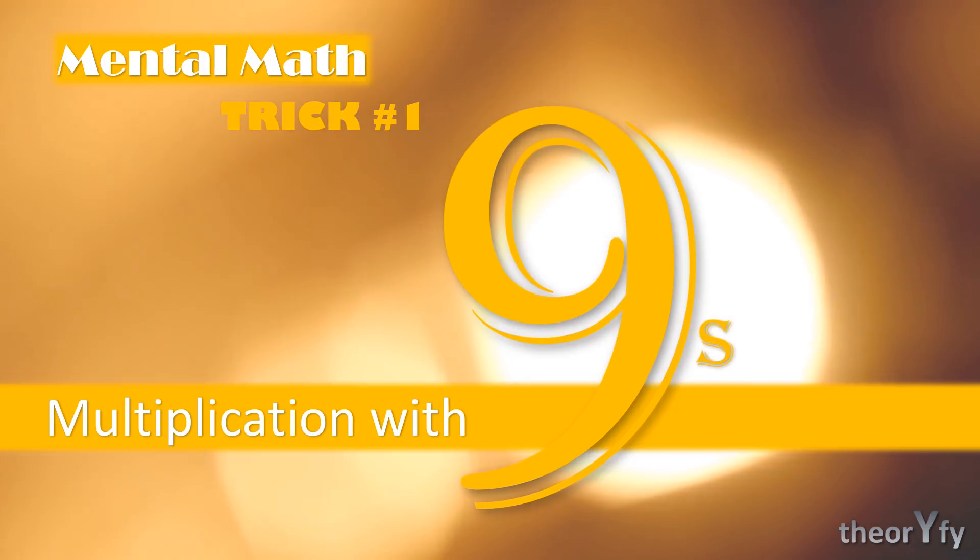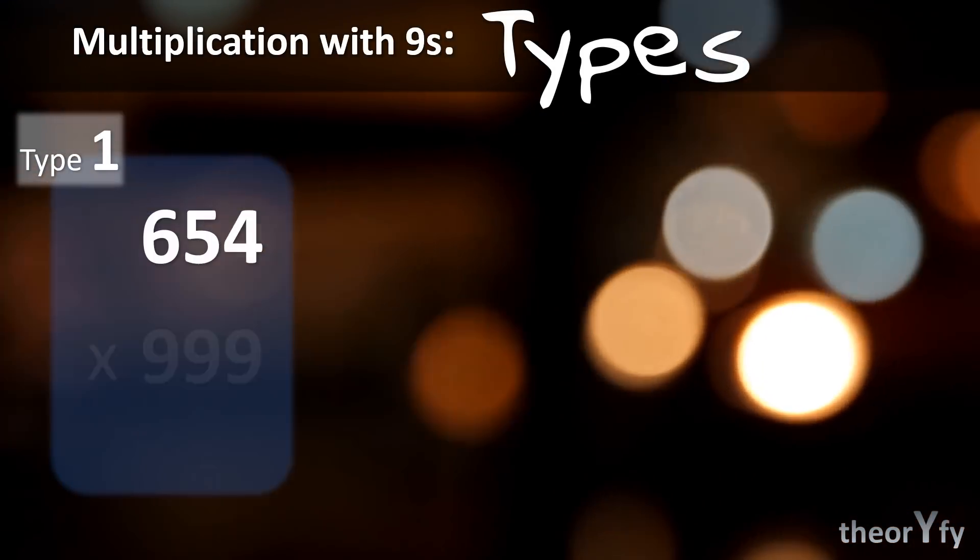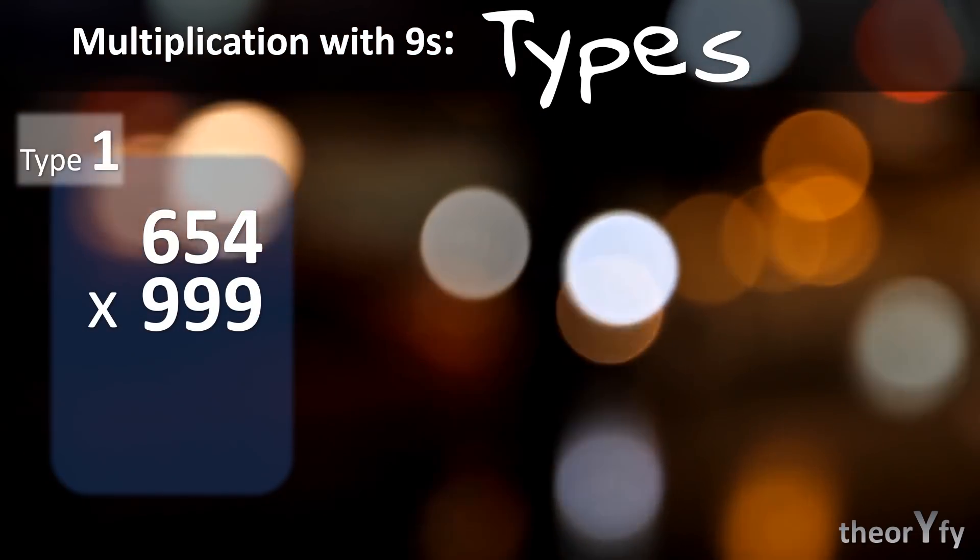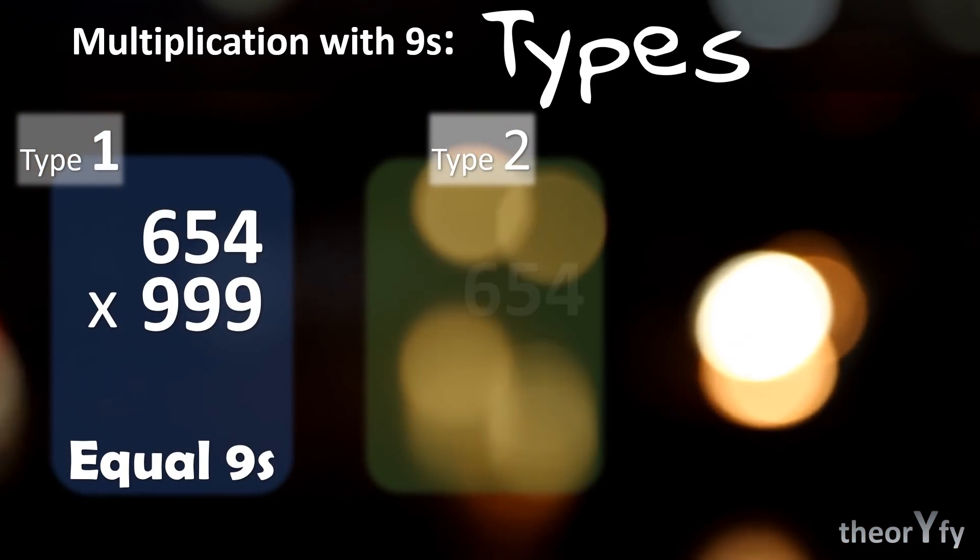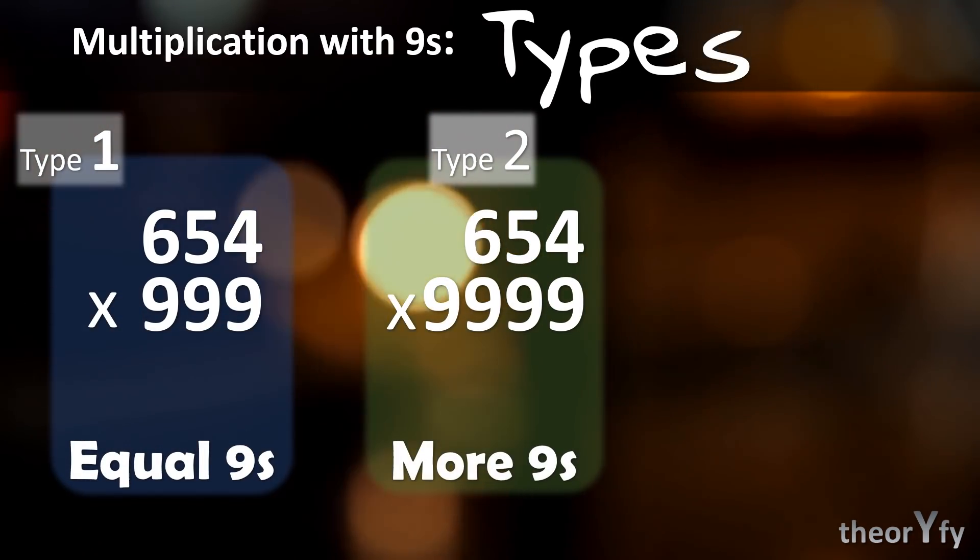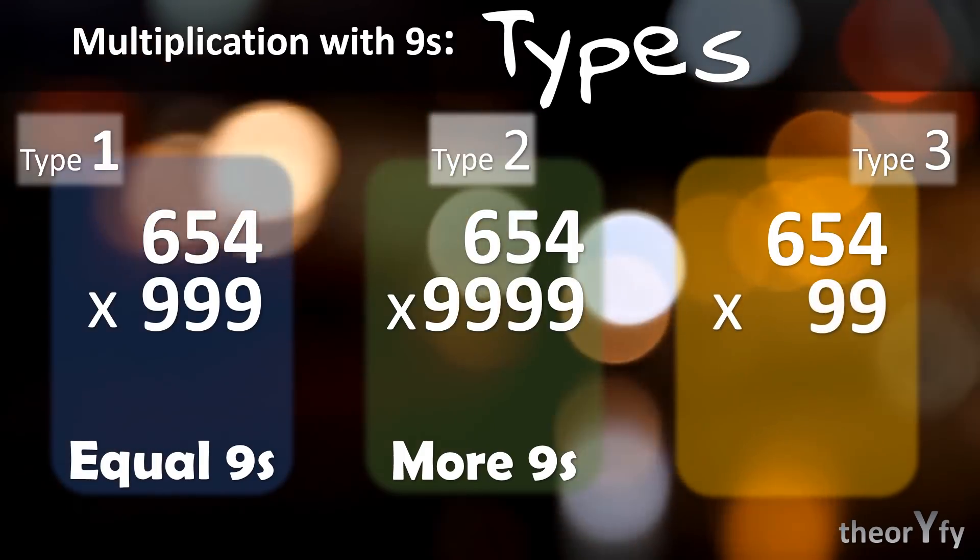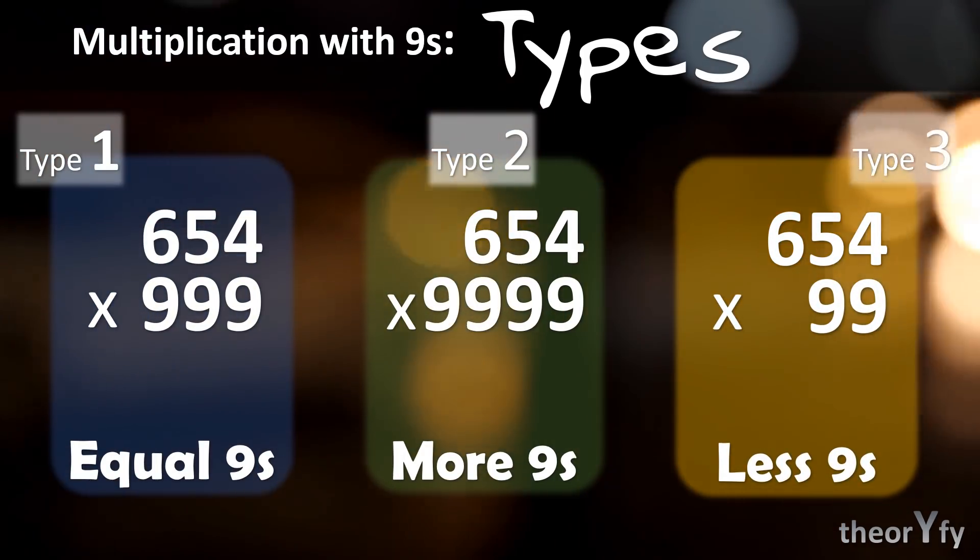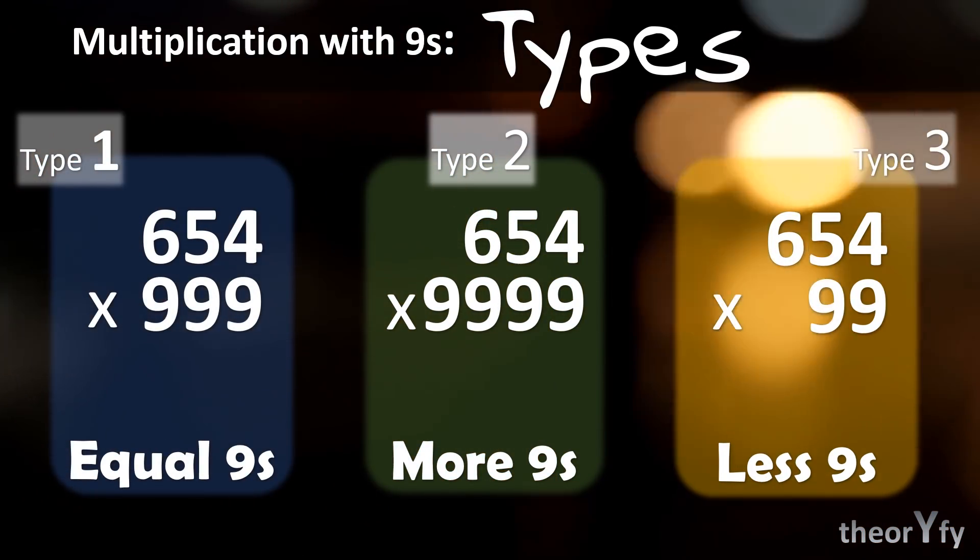We'll understand better with examples. So this method, multiplication with nines, has three variations. In Type 1, as you can see in this example, the number of nines are equal. Type 2, the number of nines are more. Type 3, the number of nines are less.